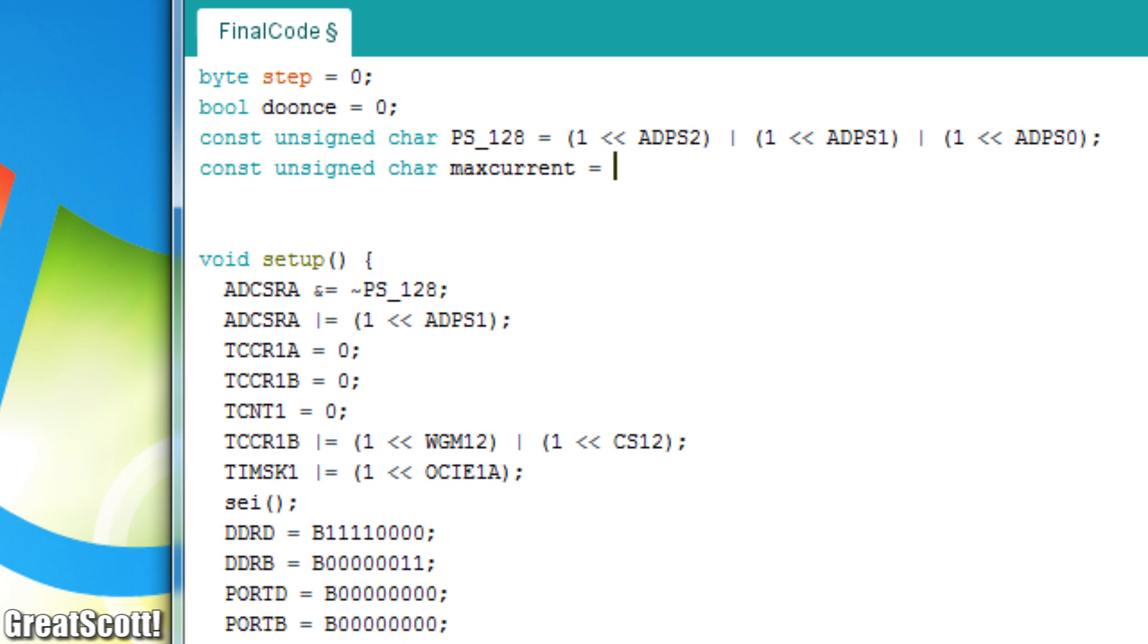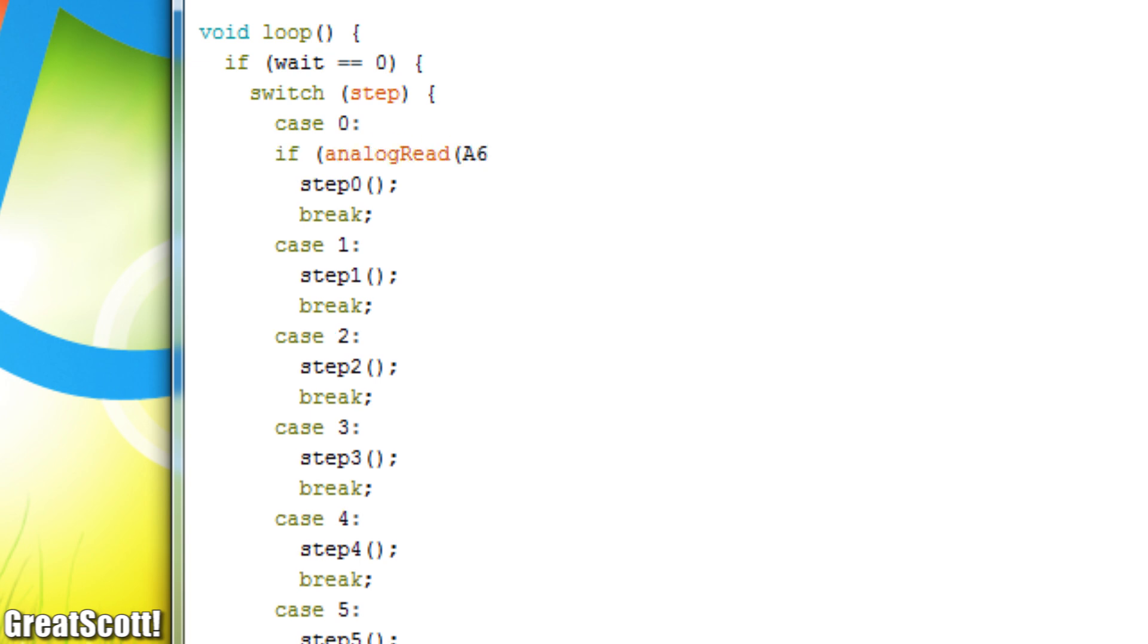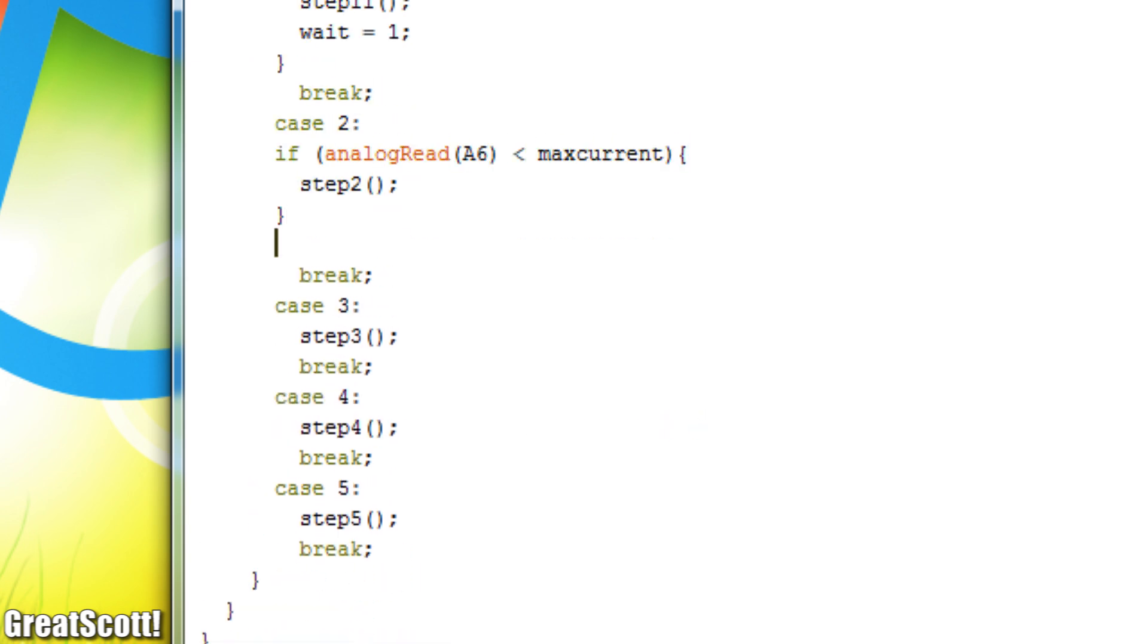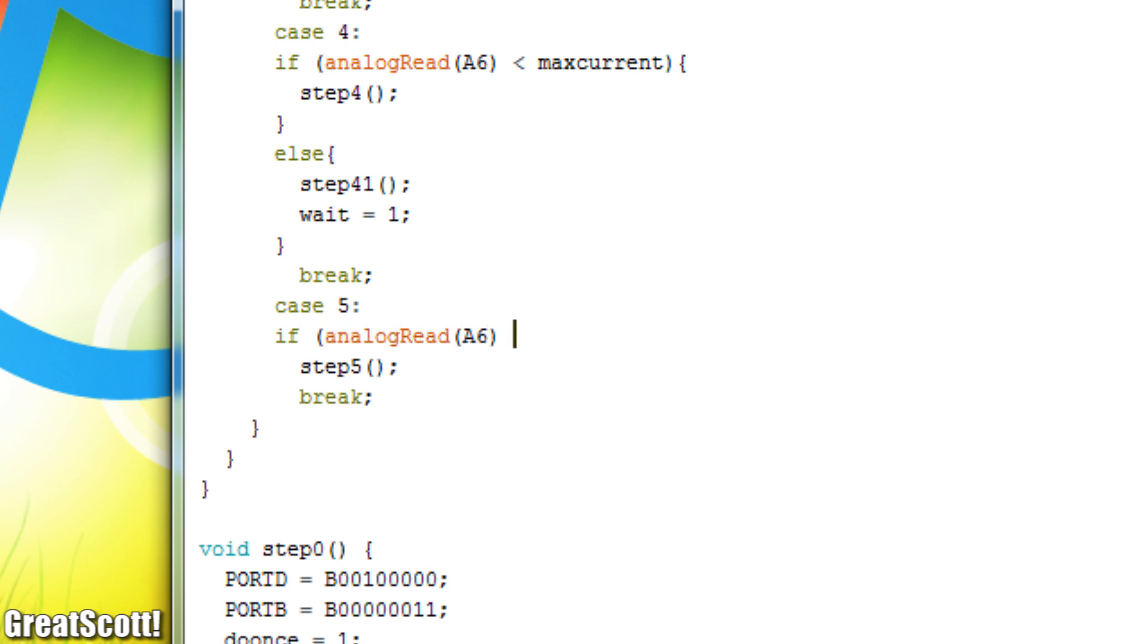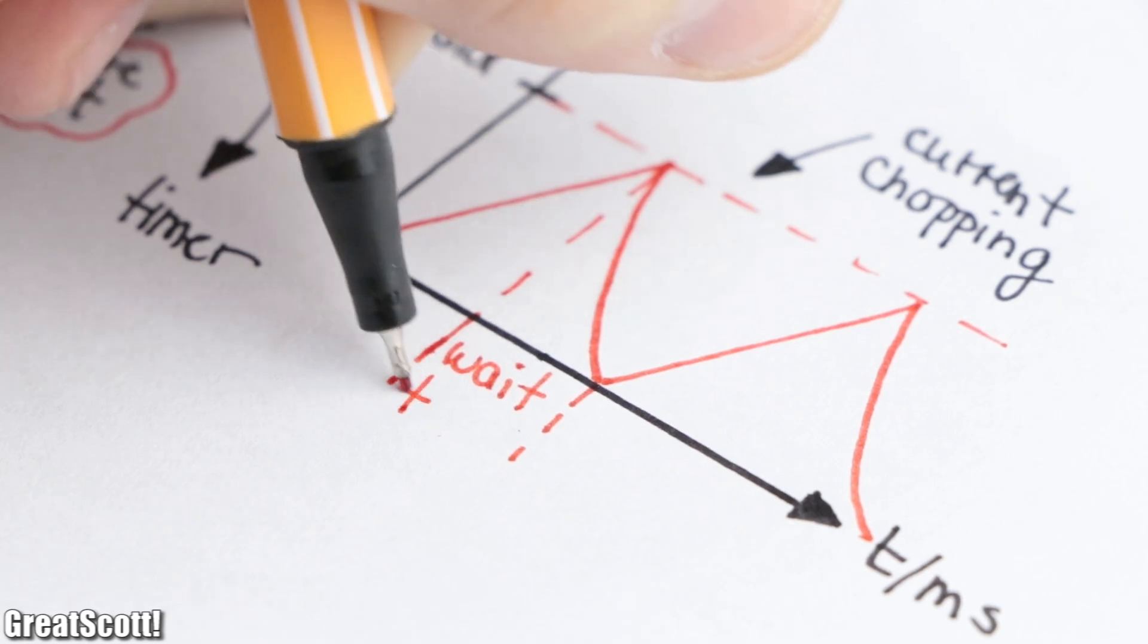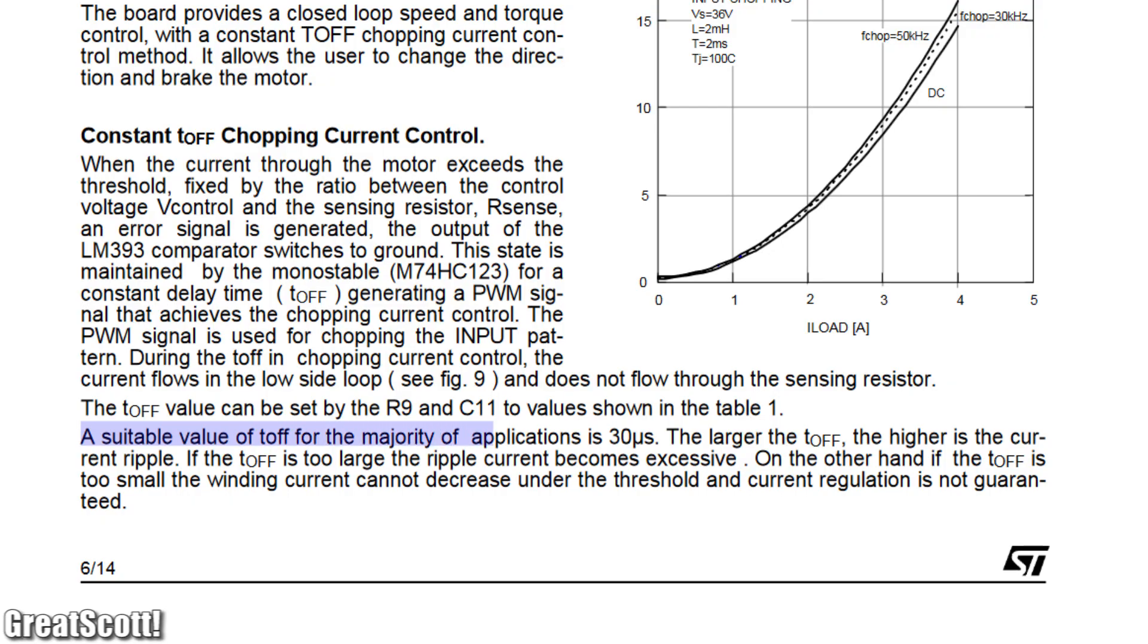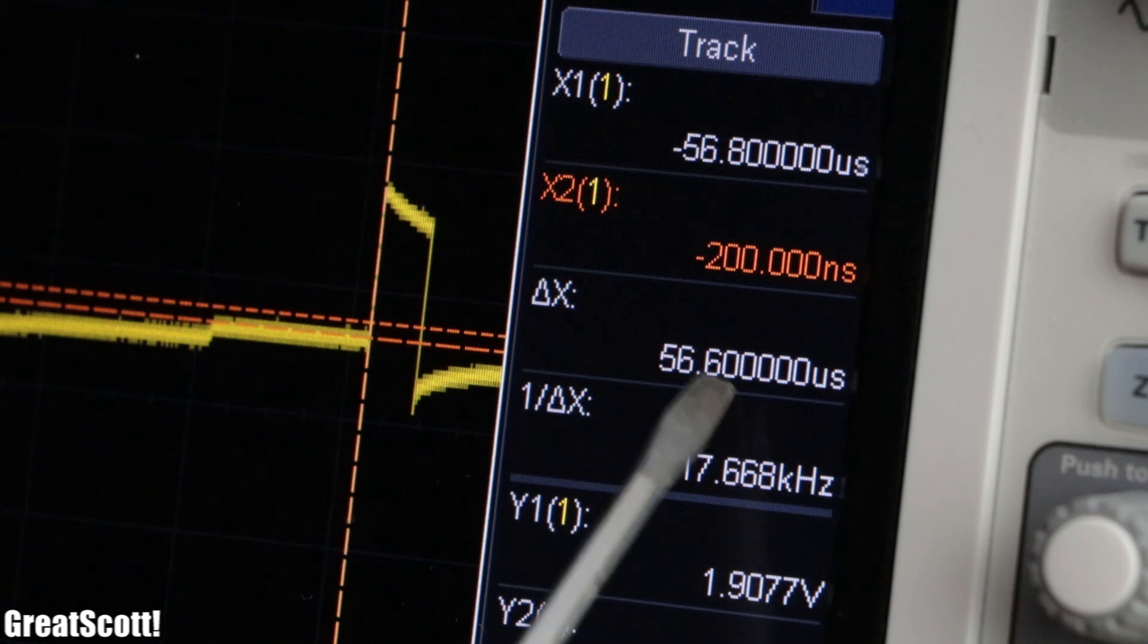This will be the threshold value for the chopping. To activate it, I removed the do-once flag for now and replaced it with a wait flag in combination with an analog read function before each step command. The principle is that the microcontroller will continuously activate the usual steps until the current reaches the threshold value. Then the corresponding low side MOSFET will be activated and the wait flag will be set. This flag stands for the wait time, which is recommended by the L6234 datasheet to be around 30 microseconds, which is pretty close to what the commercial ESC uses, around 56 microseconds.